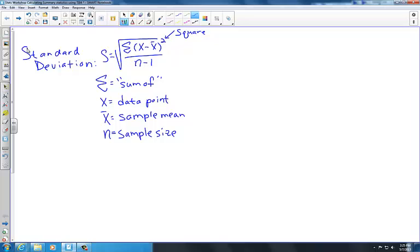The variance is used to evaluate the spread of data, and it is related to the standard deviation. In fact, the variance is simply the square of the standard deviation. Here's the formula for the variance. It's indicated by s-squared equals the sum of x minus x-bar, squared, divided by n minus 1.